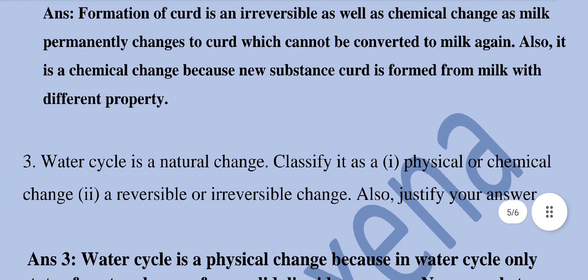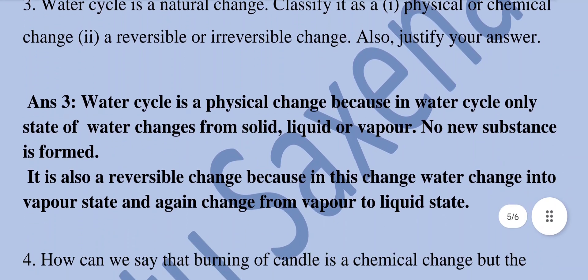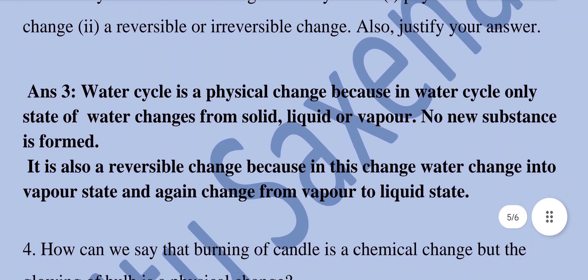Water cycle is a natural change. Classify it as a physical or chemical change and as a reversible or irreversible change, and justify your answer. Water cycle is a physical change because only the state of water changes — from solid, liquid, or vapour — and no new substance is formed. It is also a reversible change because water changes into vapour and again changes from vapour to liquid state.